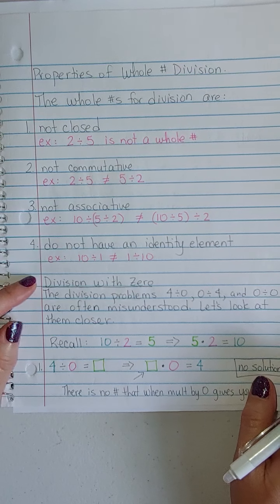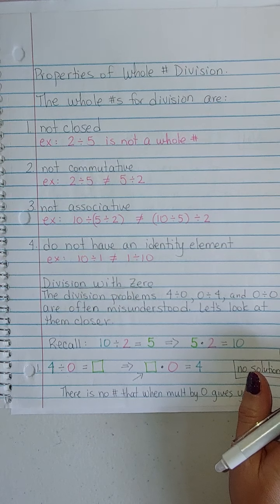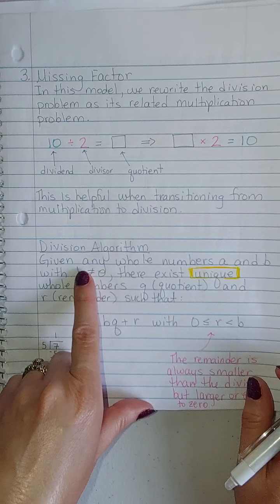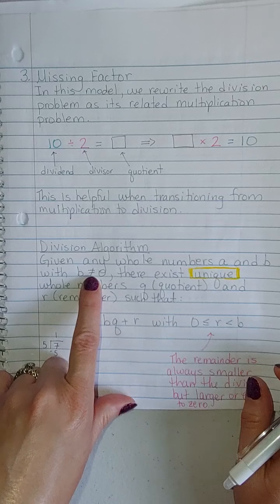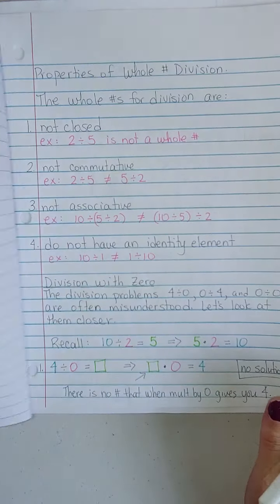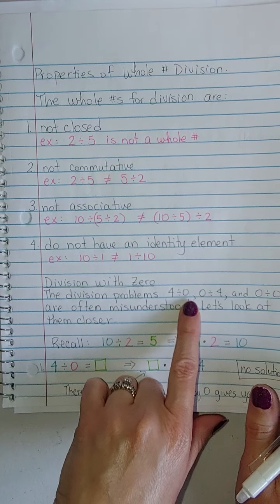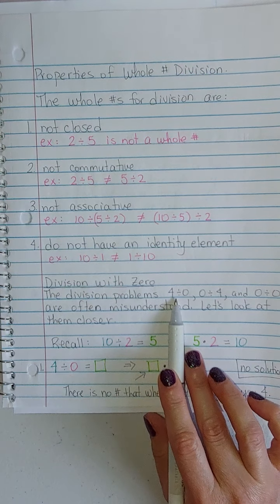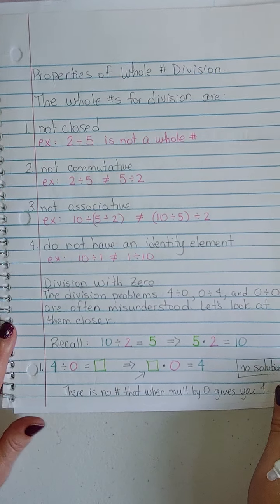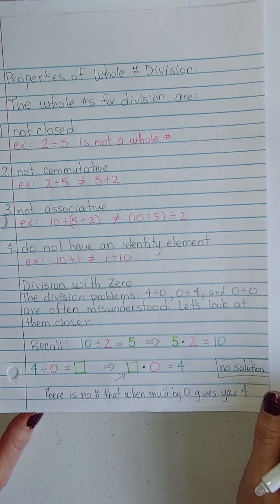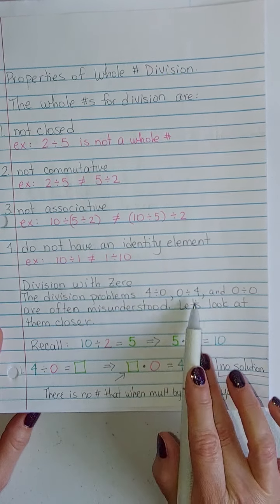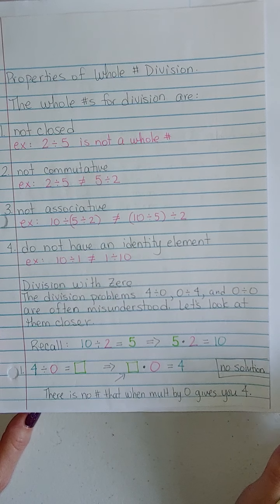Let's talk about division with 0. Back here, it was mentioned that those whole numbers A and B, we said that B can't be 0. It's because we know that you can't divide by 0, but why? These three division problems, 4 divided by 0, 0 divided by 4, and 0 divided by 0, are often misunderstood. A lot of times students will just say, well, they're all 0. No, in fact, there are three different problems with three different solutions.